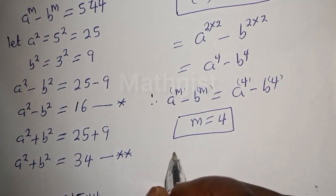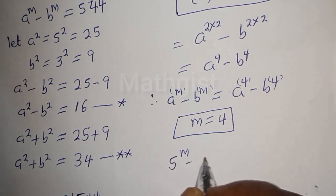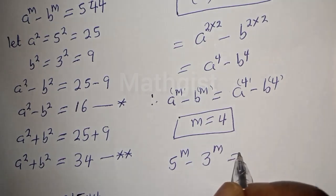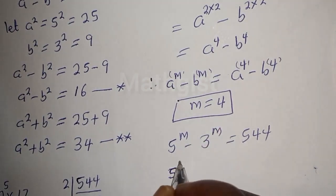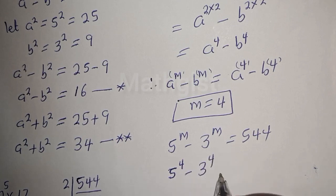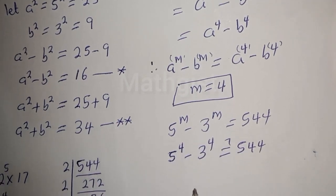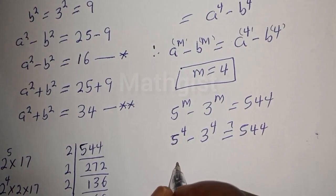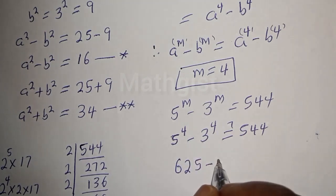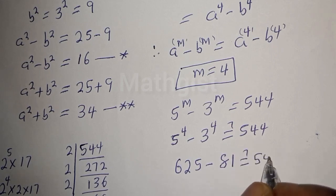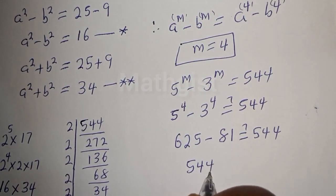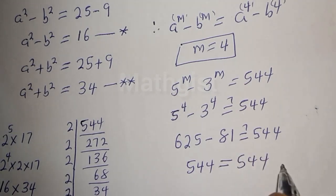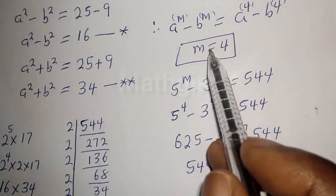Let's confirm: 5 raised to power m minus 3 raised to power m equals 544. When m equals 4, we have 5 raised to power 4 minus 3 raised to power 4. That is 625 minus 81, which equals 544. This satisfies the given equation, so m equals 4 is correct.